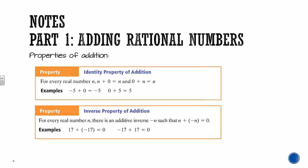You have two properties of addition: the identity and the inverse. The identity property of addition says that for every real number n, n plus zero, or zero plus n, always gives us n. Zero is the identity because it doesn't matter what you add to it — you're always going to get the number that you started with.